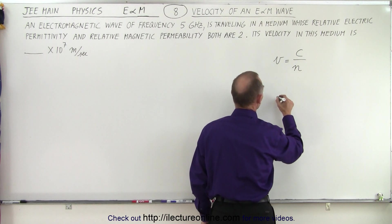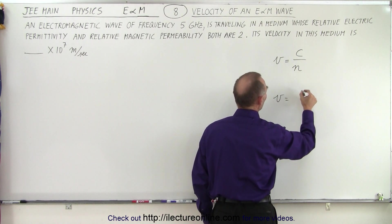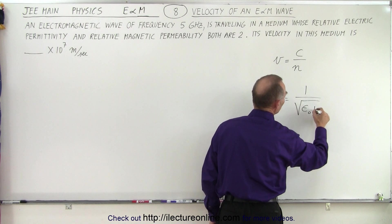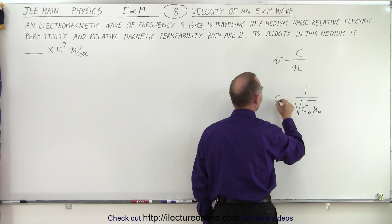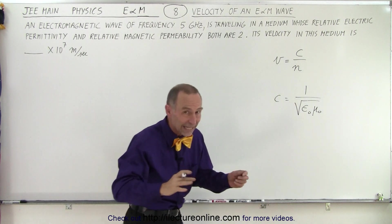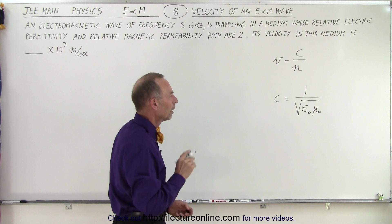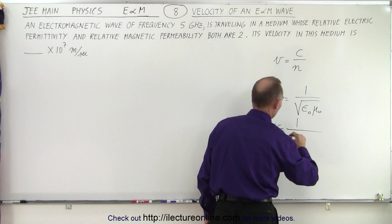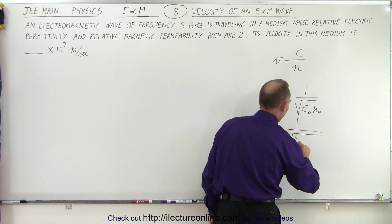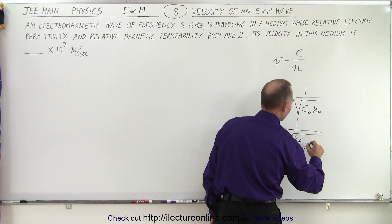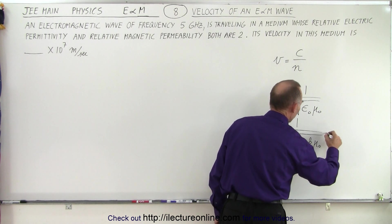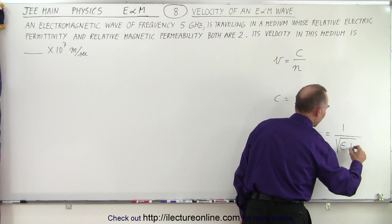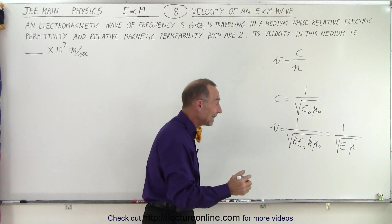We can also say that the speed of light c is equal to 1 over the square root of ε₀ times μ₀. The velocity of an electromagnetic wave in a medium is equal to 1 over the square root of some constant times ε₀ times some constant times μ₀ — in other words, 1 over the square root of ε times μ, whatever ε and μ are in that medium.